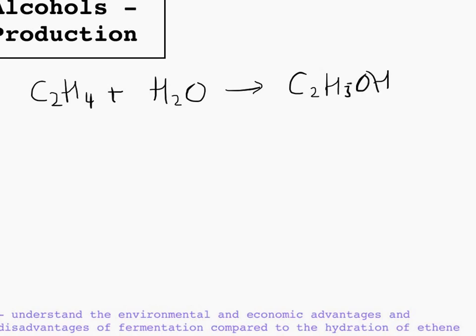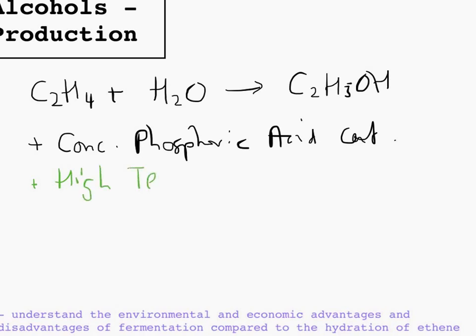The conditions for this are much more extreme. We have a concentrated phosphoric acid catalyst. We have a high temperature, around 350 to 450 degrees. And we have a pressure of 50 atmospheres, which is very high indeed. So you can see straight away what the economic disadvantages of the hydration of ethene are.